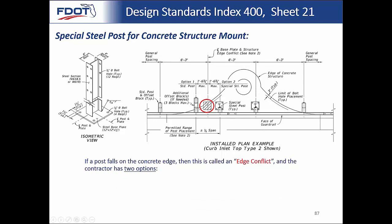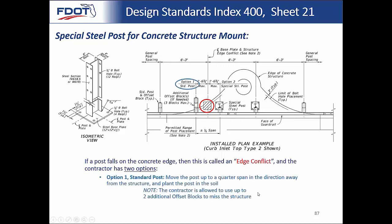Alternatively, if the post falls right on the edge — an edge conflict — you have two options. Option 1 is the standard post option, possibly with additional offset blocks, allowing movement of posts plus or minus a quarter span away from the structure. You could add up to two additional offset blocks for three total, then mount the post in soil. This is the preferred option — no special base plate posts needed, and post rotation upon impact performs more like it was crash tested. Option 2 is to move toward the structure by up to a quarter span, enabling the entire steel base plate to fit on top of the structure, mounted correctly three inches from the edge.